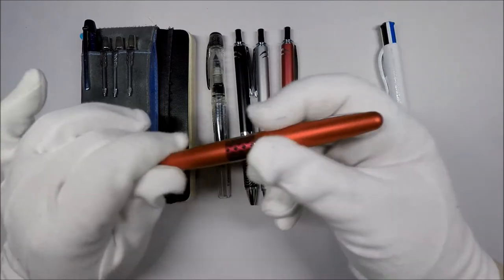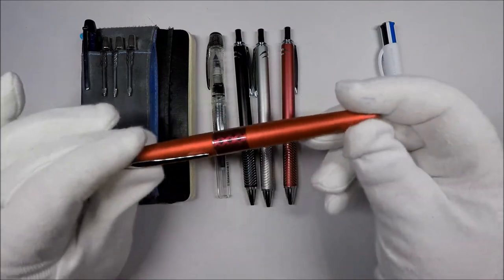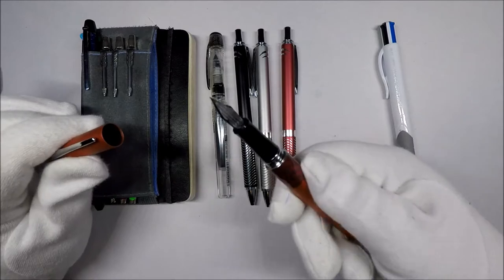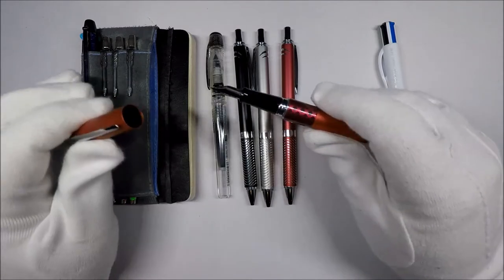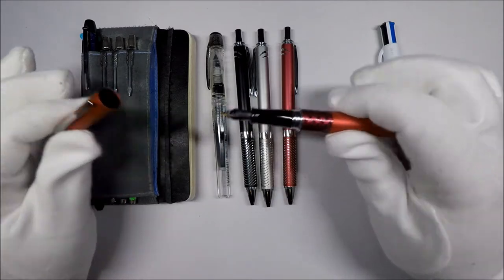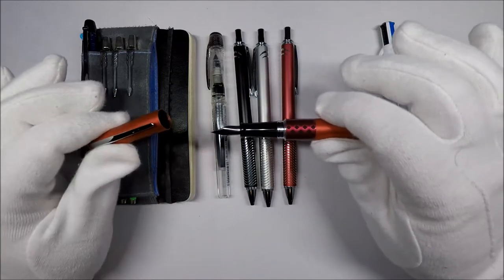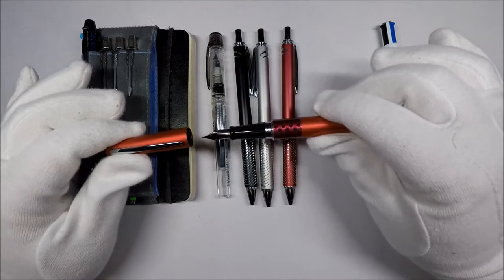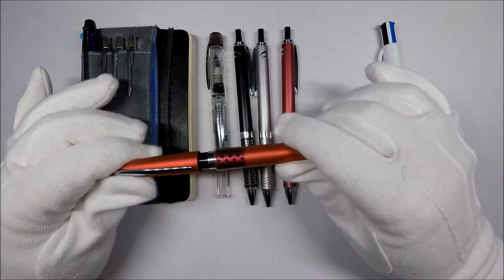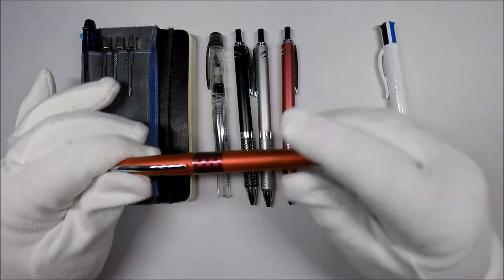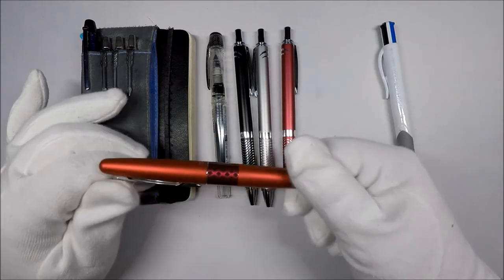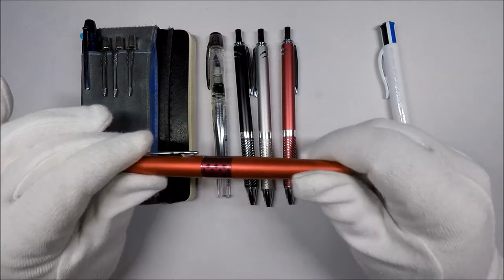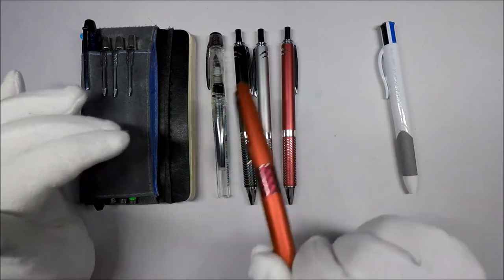The next one that I really have enjoyed writing with is the Pilot Metro. This one is a fountain pen, and it's a very good starter fountain pen. It's my starter fountain pen that I've been using the most. It's pretty comfortable to write with, relatively low maintenance as fountain pens go, and it takes a cartridge. It's under $10, and there are tons of different color choices and different designs you can get with this one.